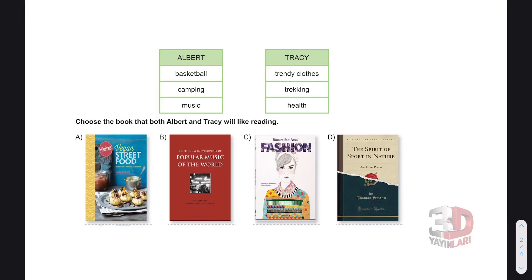Hello everyone. Let's read the question. Choose the book that both Albert and Tracy will like reading. Hem Albert'ın hem Tracy'nin okumak isteyeceği kitabı seçmemiz gerekiyor. Let's look at their interests. Basketball, camping, music, trendy clothes, modaya uygun kıyafetler, trekking, yürüyüş yapmak, and health, sağlık. Kitaplara bakalım.